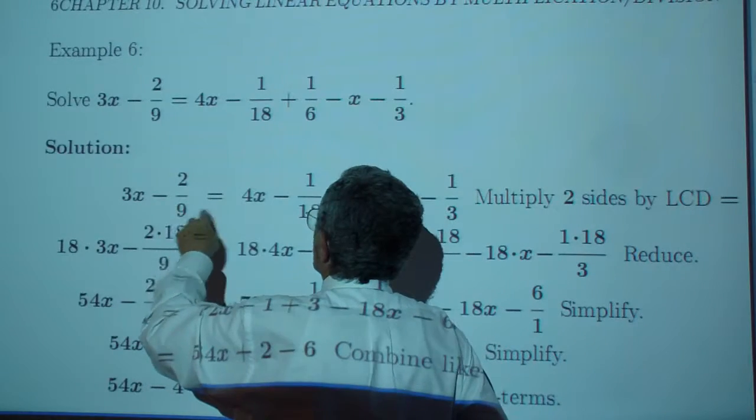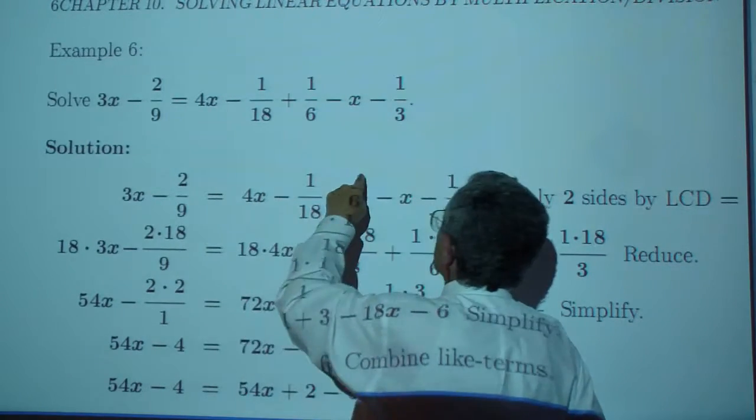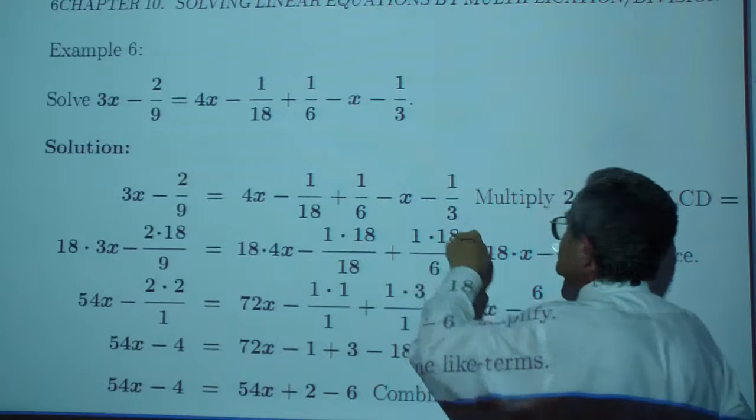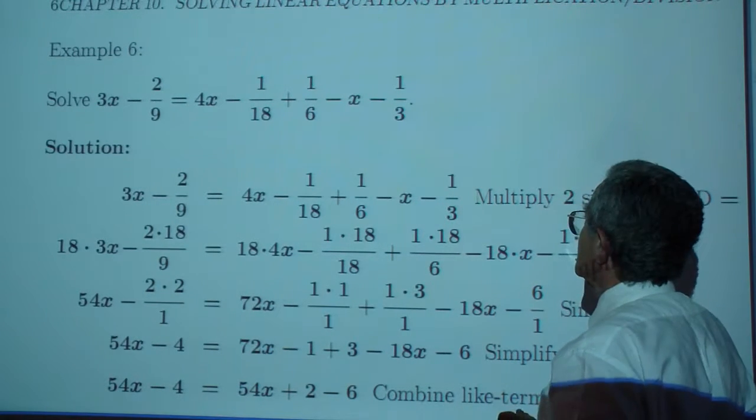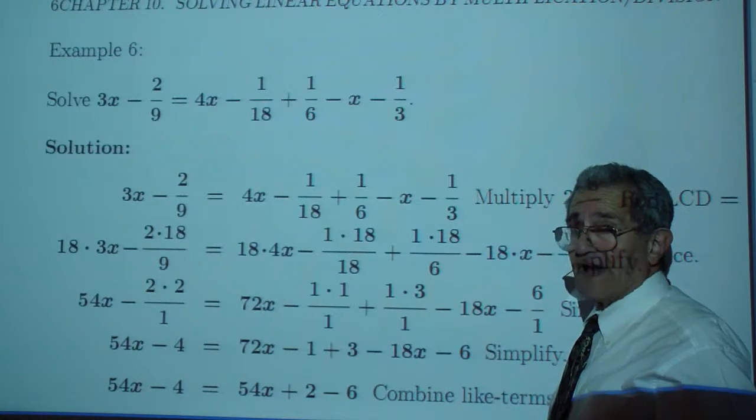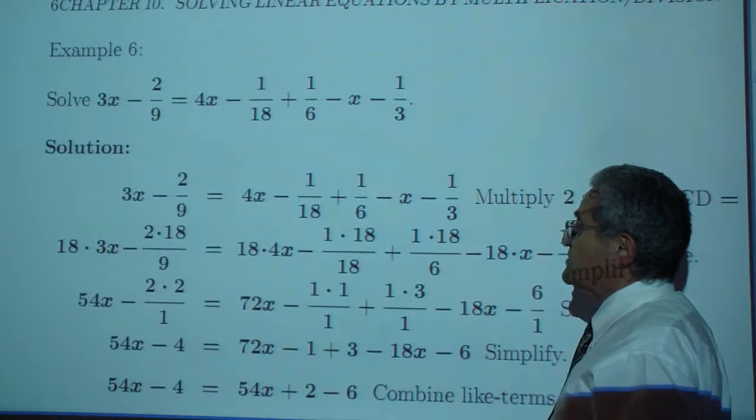Solve 3x minus 2 over 9, which is 4x minus 1 over 18 plus 1 over 6 minus x minus 1 over 3. You don't like fractions, do you? So multiply by the least common denominator, which is 18.